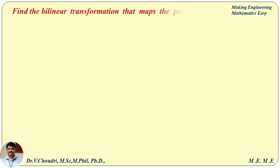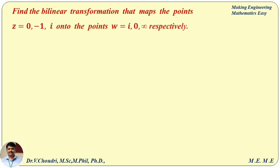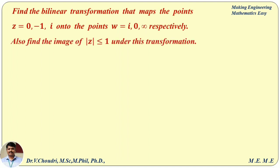Find the bilinear transformation that maps the points z equal to 0, minus 1, i onto the points w equal to i, 0, infinity respectively. Also find the image of modulus z less than or equal to 1 under this transformation. We are going to find the bilinear transformation through the points and also find the image of the unit circle.